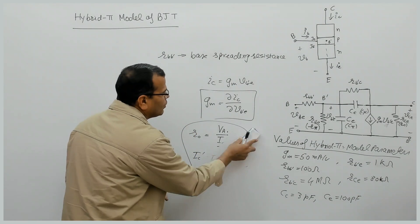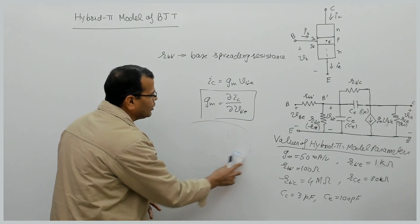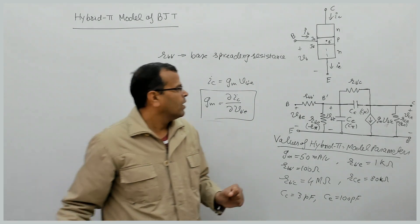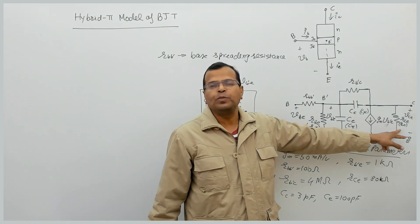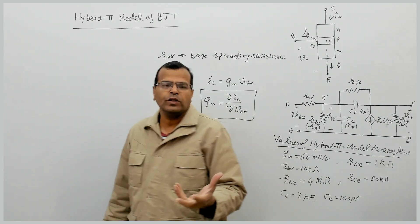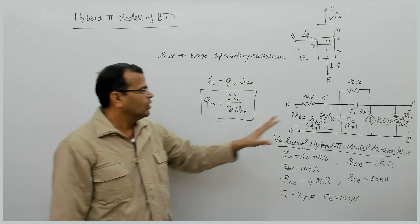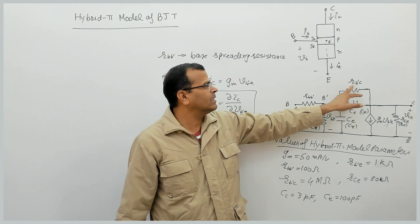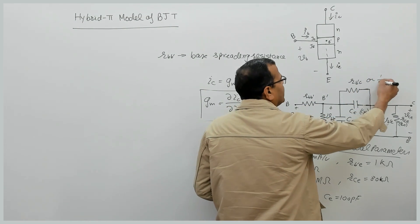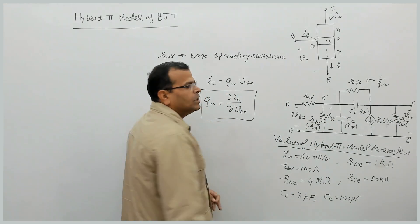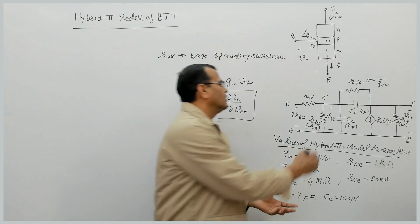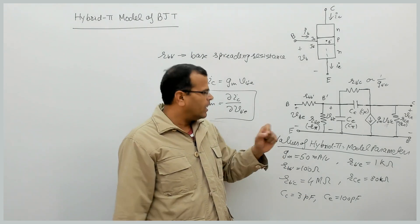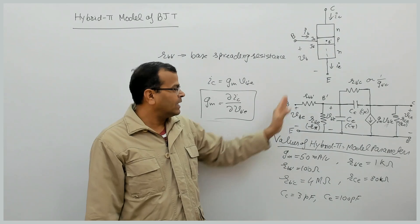RCE is the output resistance of BJT, and GM·V_B'E is a voltage-dependent current source used in the hybrid pi model. These are some of the parameters. Sometimes these resistances are denoted by conductances: R_B'C corresponds to 1/G_B'C, and R_B'E corresponds to 1/G_B'E.